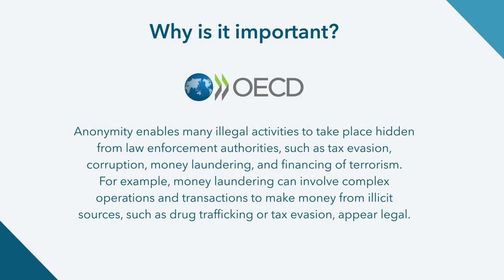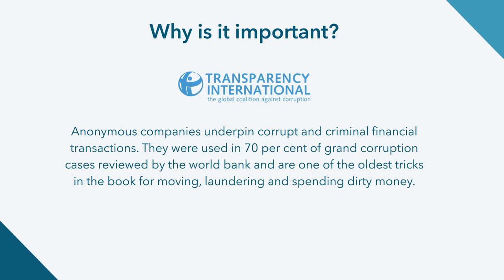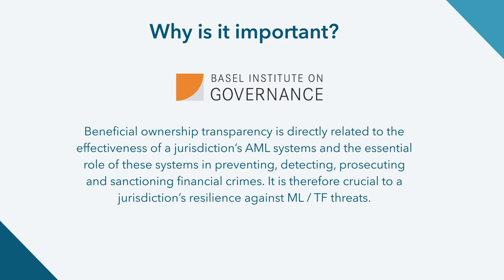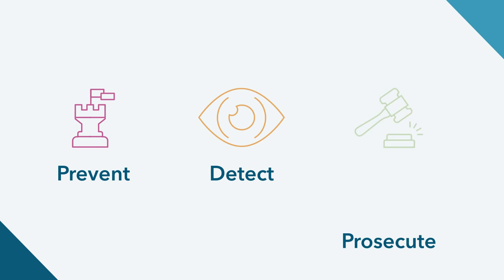This is why governments, NGOs and other bodies such as the OECD, G20, Transparency International and others have all made statements around the need to increase transparency around who owns legal entities and to make this available to the public. This transparency is directly related to the effectiveness of a jurisdiction's ability to prevent, detect and prosecute financial crime.